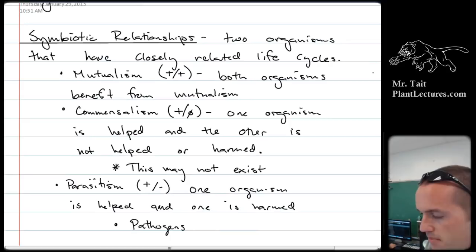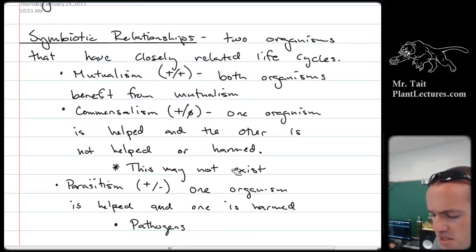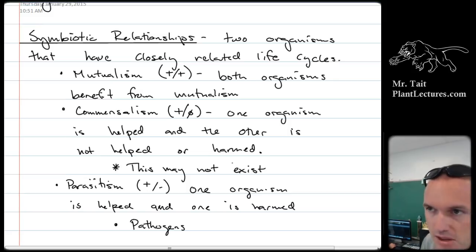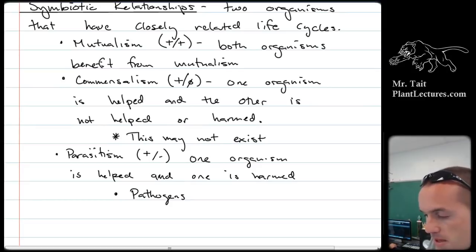We talked about the different types of symbiosis. Mutualism — both organisms benefit. Commensalism — one organism benefits and the other is neither helped nor harmed. We said that commensalism might not be a thing; it might just be based on us not fully understanding the relationship. Parasitism — one organism is helped and the other one is harmed.